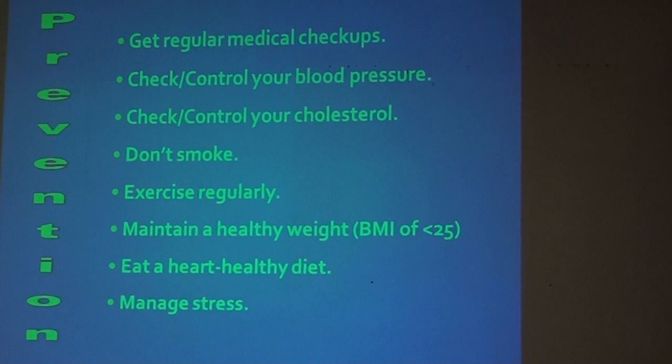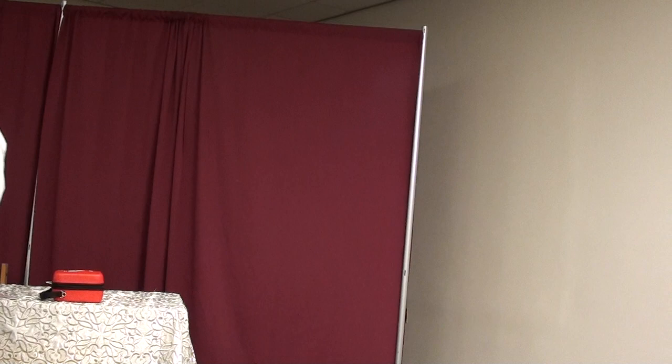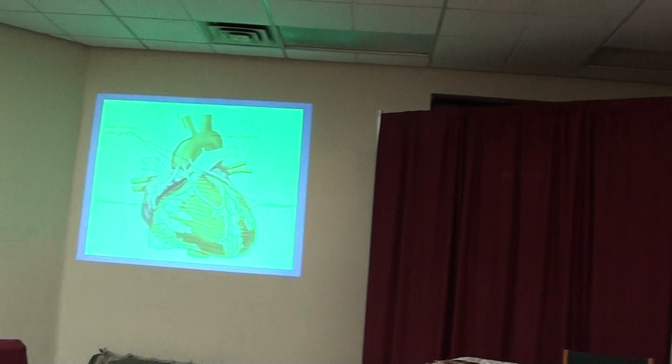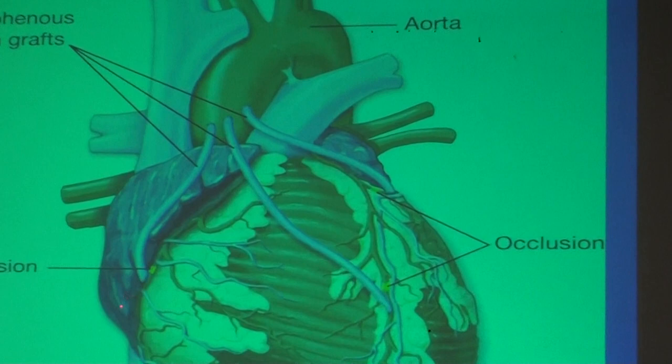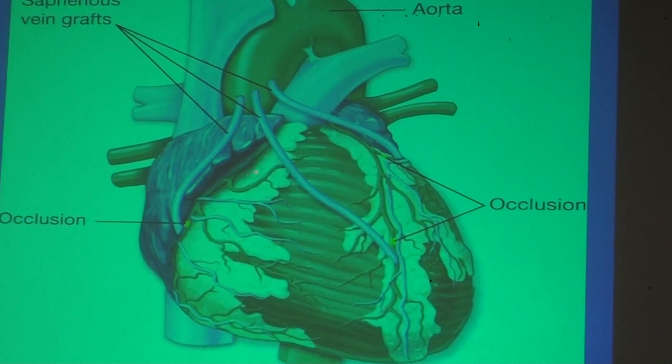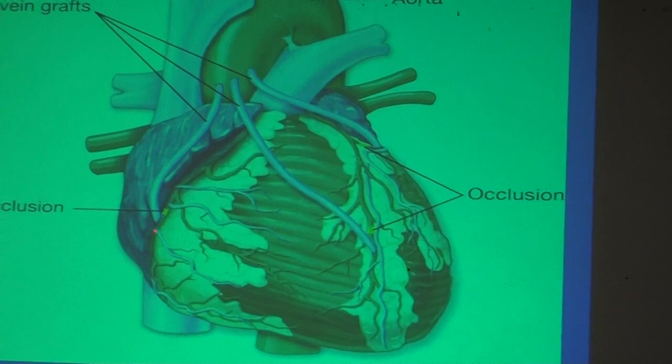Q&A: Question about what happens to the blocked artery during bypass surgery. Answer: The blocked artery stays in place — it is not removed. Upstream from the blockage, the artery continues to supply smaller branches. The bypass graft is attached to the aorta and connected downstream from the blockage, restoring flow to that part of the heart while the original artery continues supplying its upstream branches.